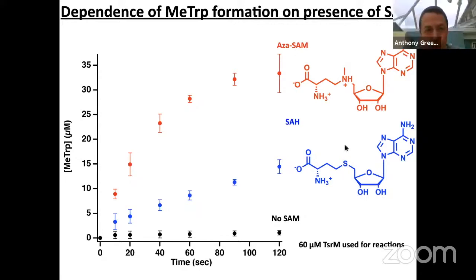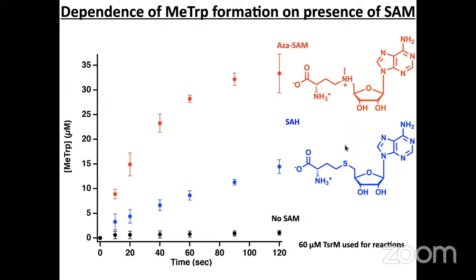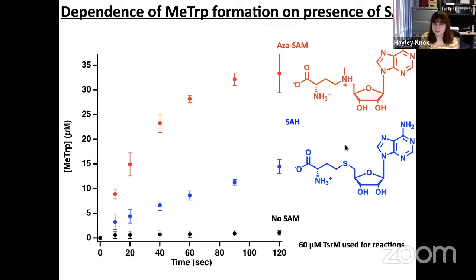There are more questions in the Q&A. Nicola, do you observe any other methylated products of tryptophan given that the crystal structure shows a completely different orientation and your mechanism is different? How specific is it? It has been long shown that TSRM selectively methylates the C2 position, and we have not looked for other methylated products specifically.